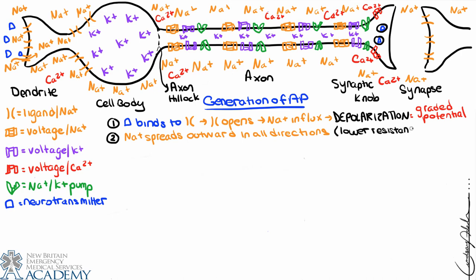The sodium ions are going to spread mostly along the membrane because there's lower resistance along the membrane. Similar to if you're going to wade through a pool — it's easier to move along the wall of the pool than through the middle. So the sodium ions are going to hover towards the membrane and less in the middle of the cell, but they're going to spread away from each other as much as possible.